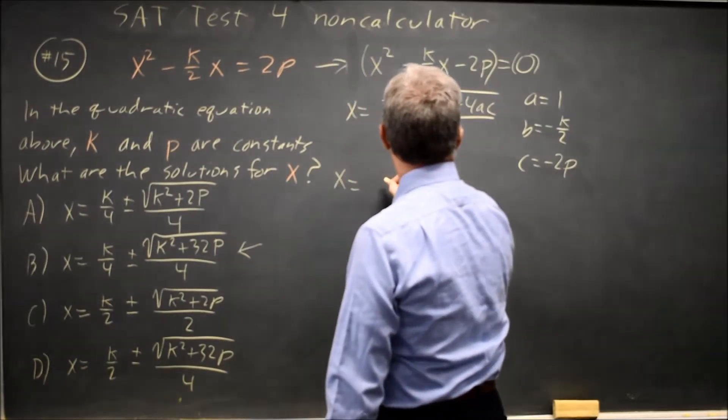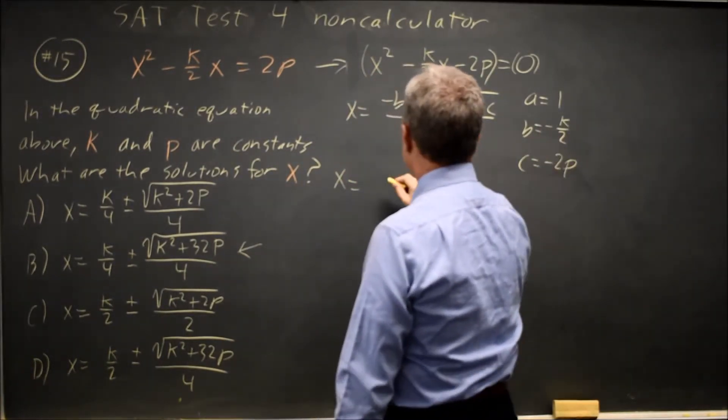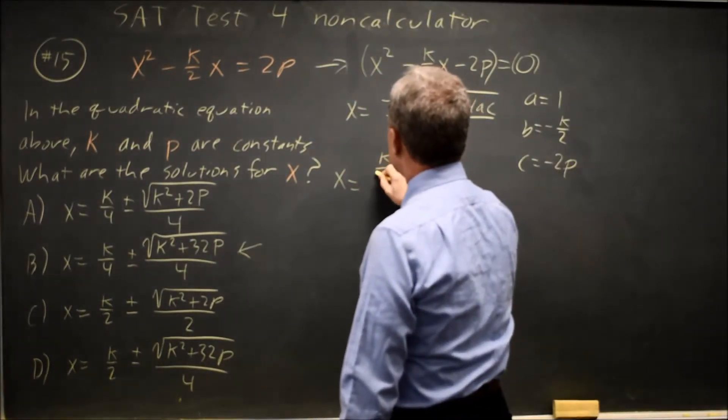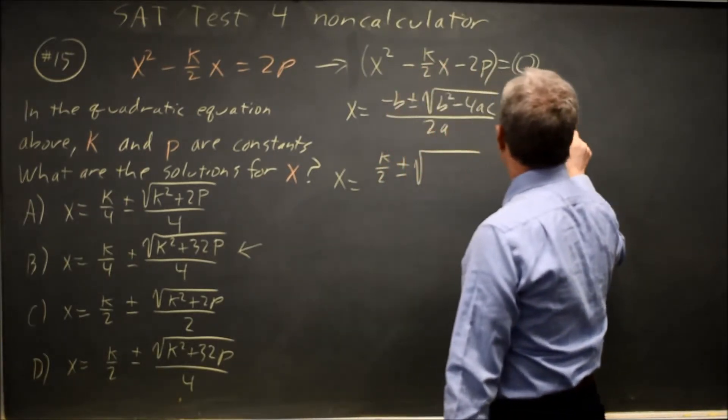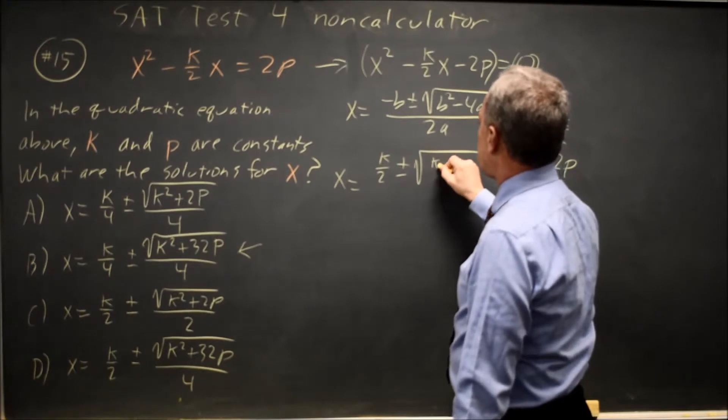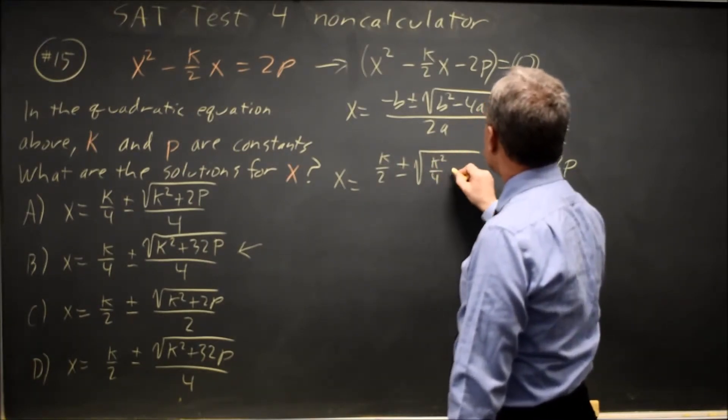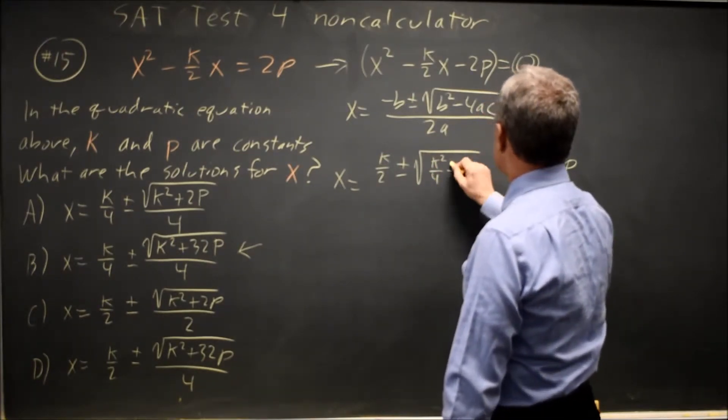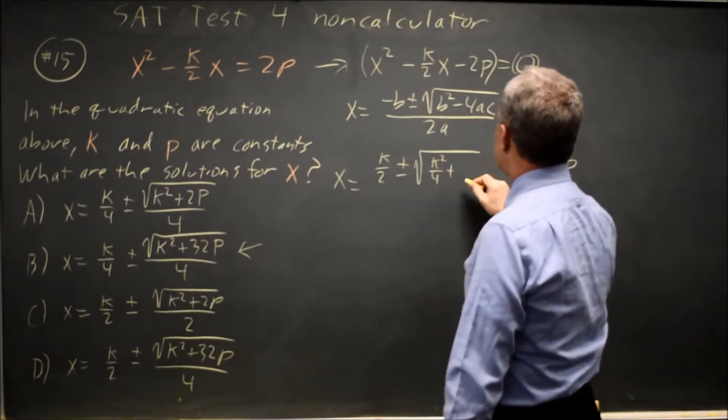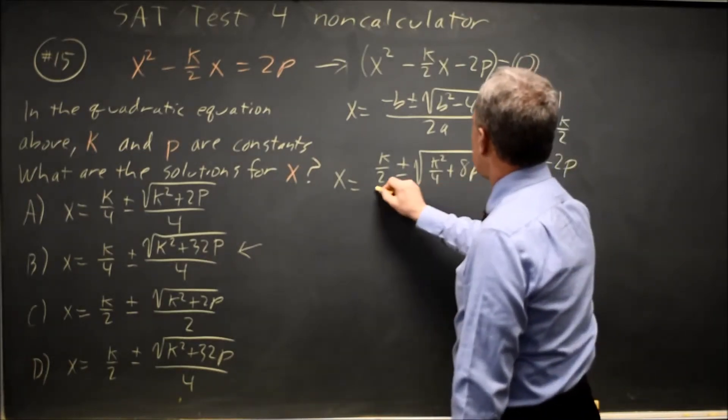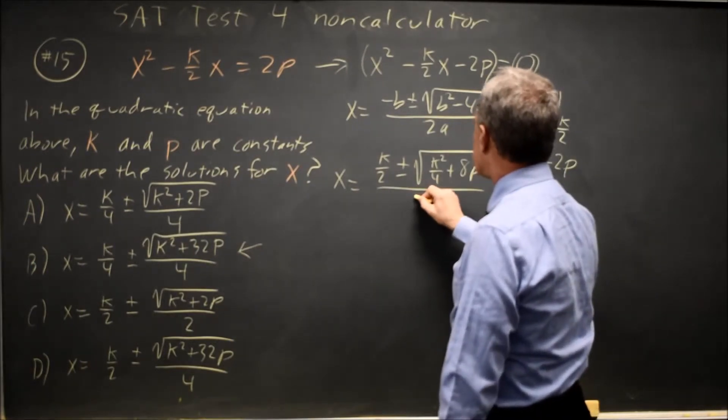So x equals negative b is minus negative k over 2 is plus k over 2, and then plus or minus the square root. Negative k over 2 squared is positive k squared over 4, minus 4ac is minus and negative is plus. 4 times 2p is 8p times 1 is still 8p, and that is all over 2a, which is twice 1 is 2.